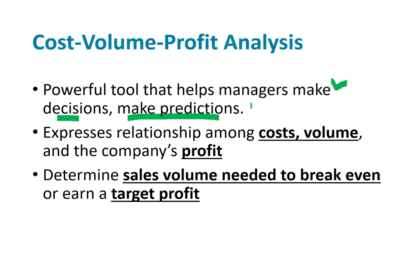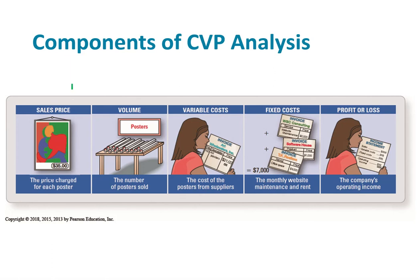Here we're going to use CVP analysis — it has to do with cost, volume, and profit. We're going to determine the sales volume needed to break even and to earn a targeted profit. A little example will be that we look at the sales price, the volume, the variable cost, the fixed cost, and the profit for a small business called Kay's Posters.